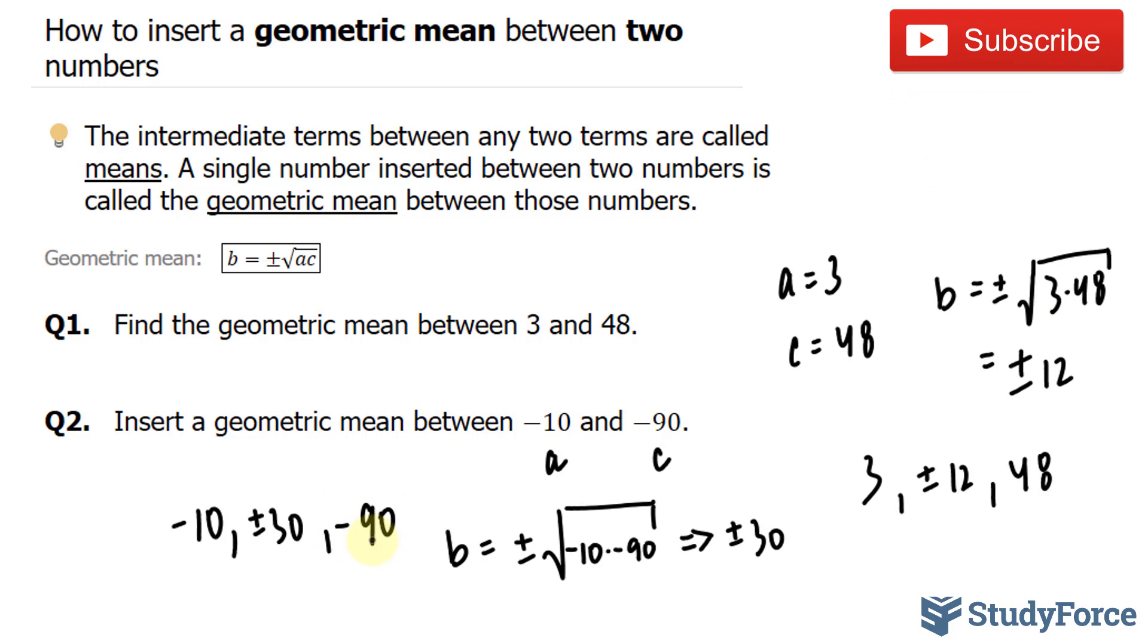And so there you have it. Two examples on how to insert a geometric mean between two numbers.